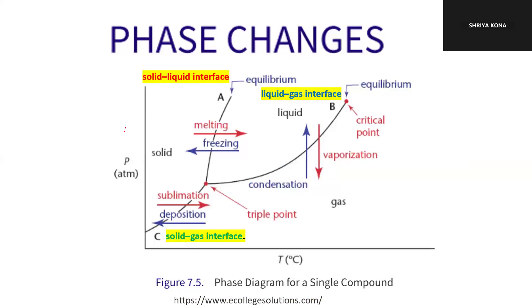This is our graph of pressure and temperature. As you can see, there are points A, B, and C on this graph. Point C is known as the solid-gas interface. Point A is known as the solid-liquid interface. And point B is known as the liquid-gas interface. I'm just trying to introduce you to these terms, and onto the next slide I will make my own drawings and explain the concepts.